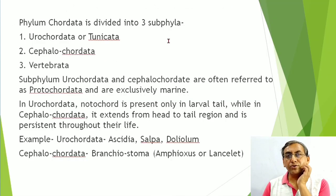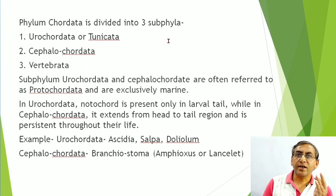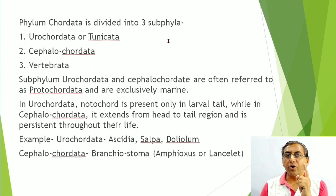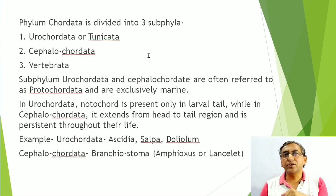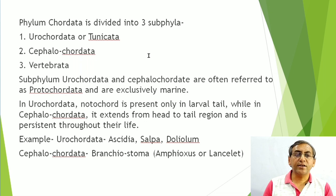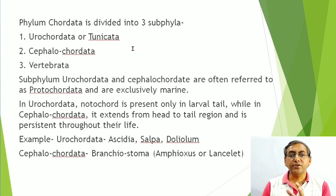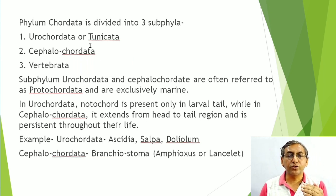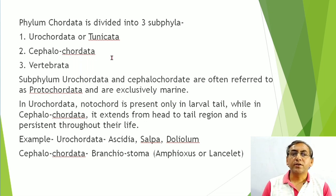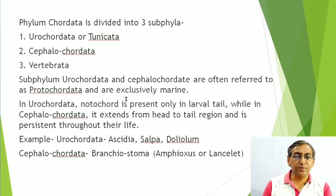Phylum Chordata is classified into three subphyla based on notochord position: (1) Urochordata — notochord present only in larval tail; (2) Cephalochordata — notochord extends from head to tail, persistent throughout life; (3) Vertebrata — notochord converted into bony or cartilaginous vertebral column. Urochordata is also known as Tunicata. Urochordata + Cephalochordata together = Protochordata, which is exclusively marine.